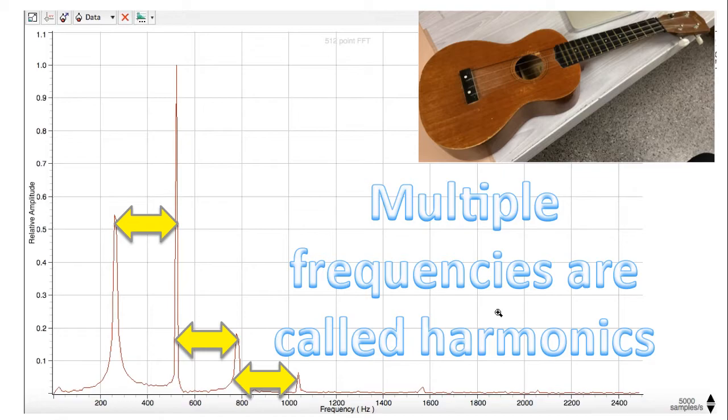These frequencies share a mathematical relationship. As you can see from the graph, they are multiples of each other. In other words, the second frequency here is two times this first frequency, and the third frequency is three times this first frequency, and this fourth frequency is four times this first frequency. These multiple frequencies are called harmonics.